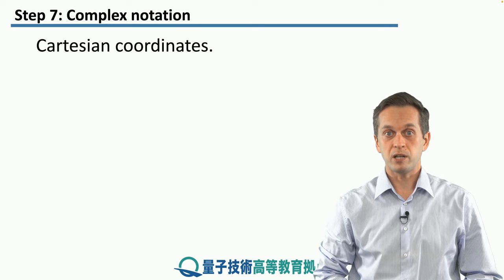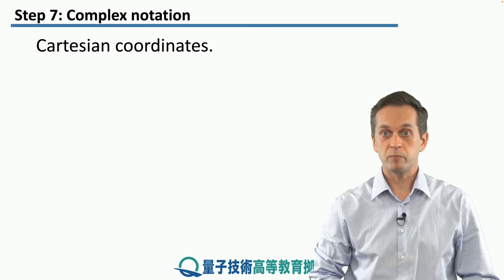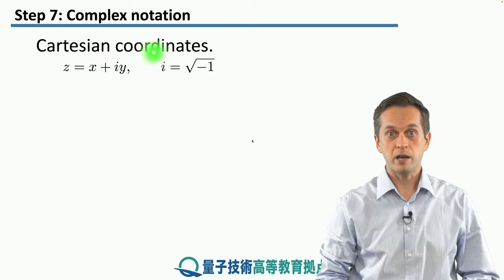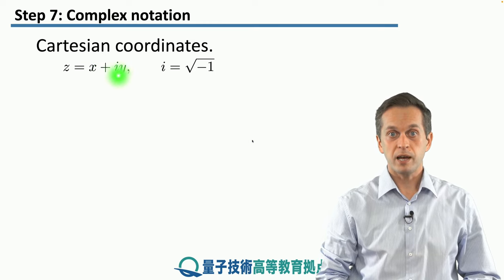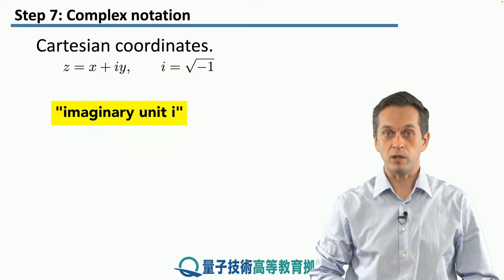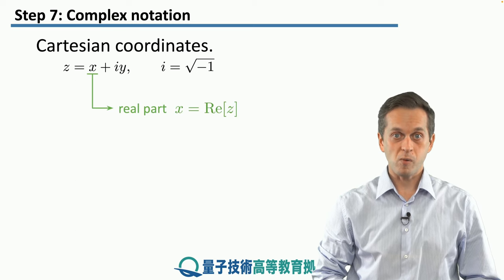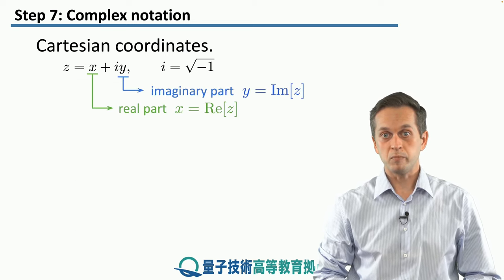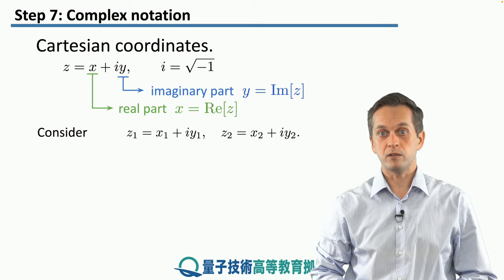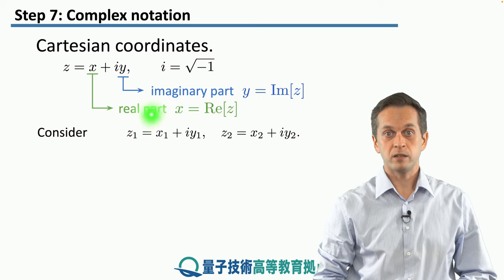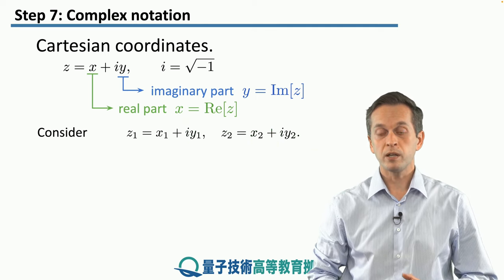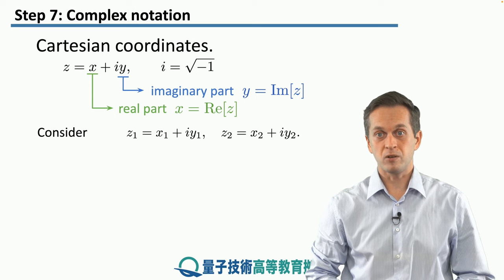So what are complex numbers? We're going to start with the Cartesian coordinate representation, where a complex number z is represented as x plus iy. Here x and y are real numbers, and i is defined as the square root of negative 1. x is called the real part of the complex number and y is called the imaginary part. If we have two different complex numbers z1 and z2 with their respective real parts x1 and x2 and imaginary parts y1 and y2, we can perform basic operations on them in the following way.